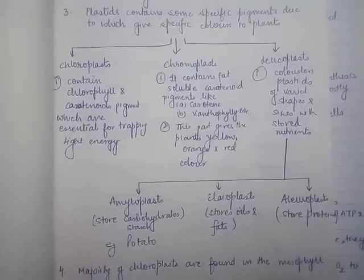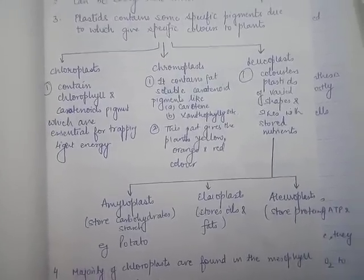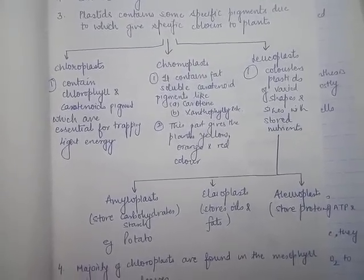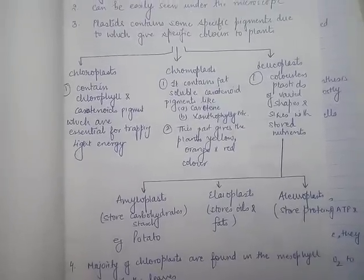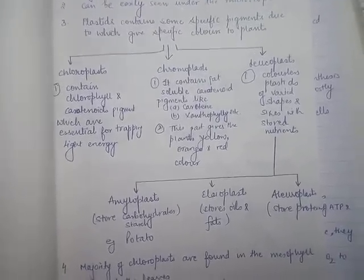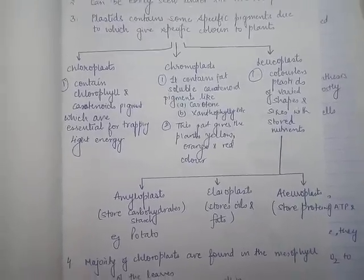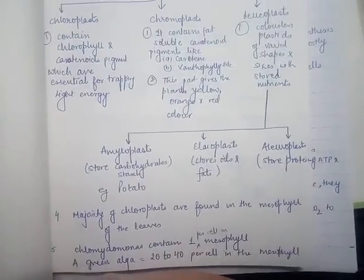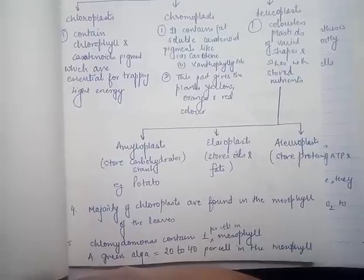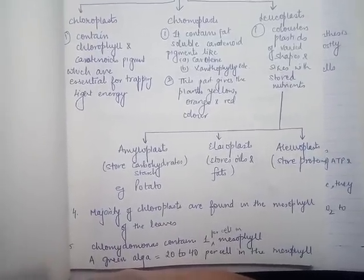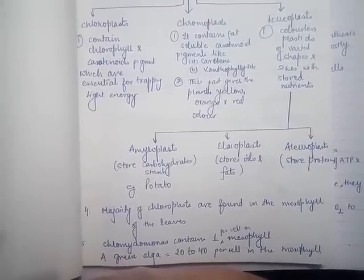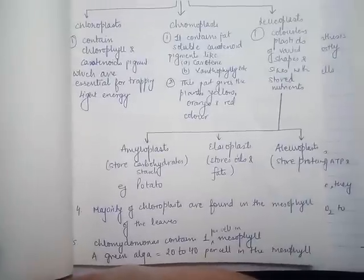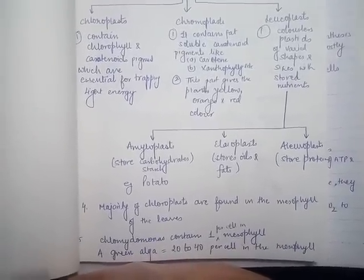Leucoplasts are colorless plastids with different shapes and sizes. They store nutrients. There are three types: amyloplasts store carbohydrates/starch (e.g., potatoes), elaioplasts store oils and fats (e.g., olive oil), and aleuroplasts store proteins.